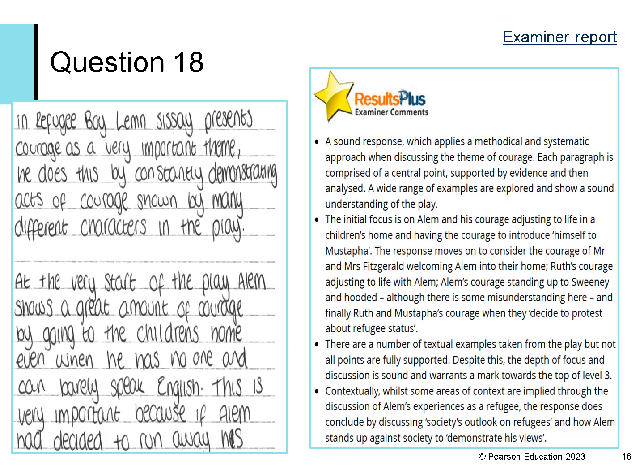And here is the same for question 18 about how courage is important in the play. You may wish to look at the exemplar in full on page 158 of the report. This is a sound response which applies a methodical and systematic approach. The student looks at the theme of courage and uses a number of textual examples from the play, although not all points are fully supported. The use of context is implied in some areas, but the student does conclude with discussing society's outlook on refugees. This response was given a mark towards the top of level 3.